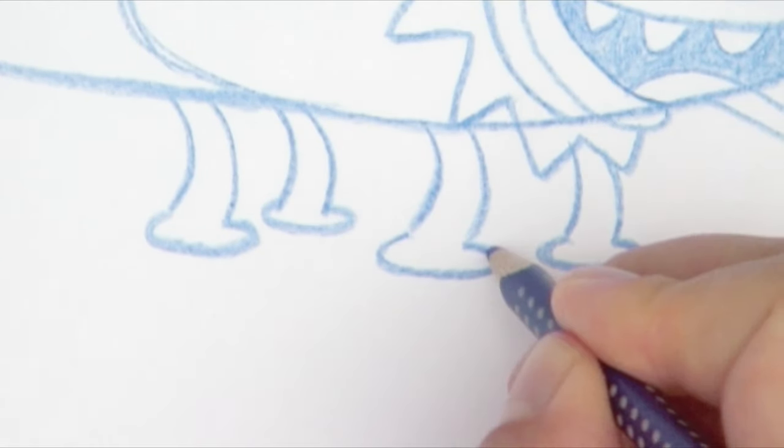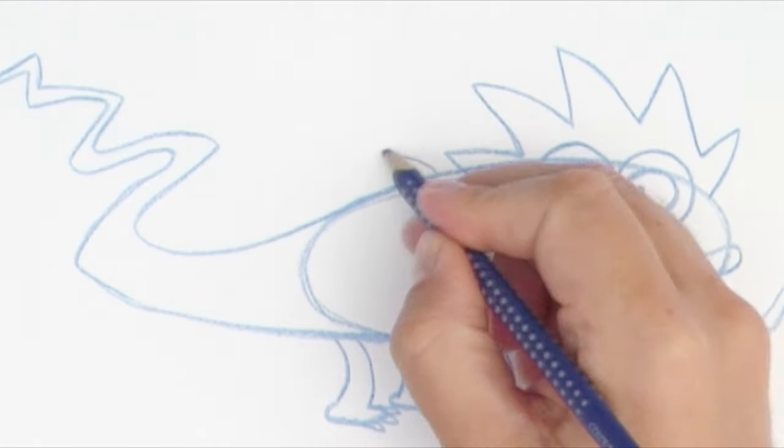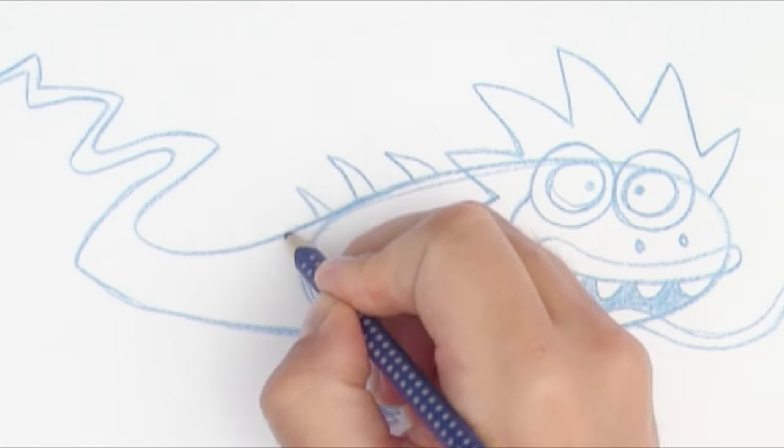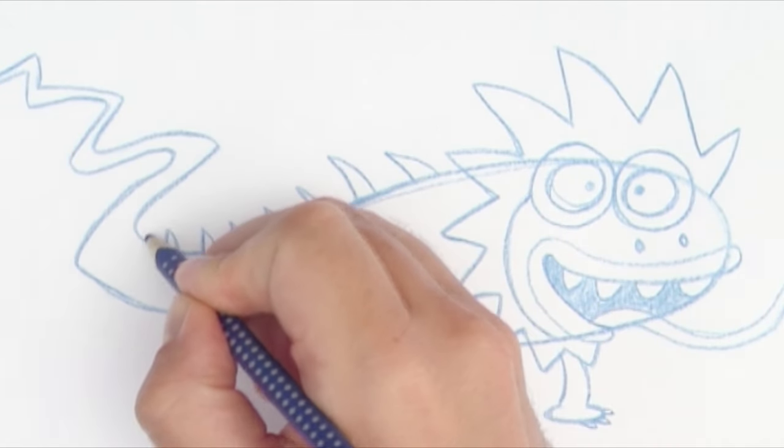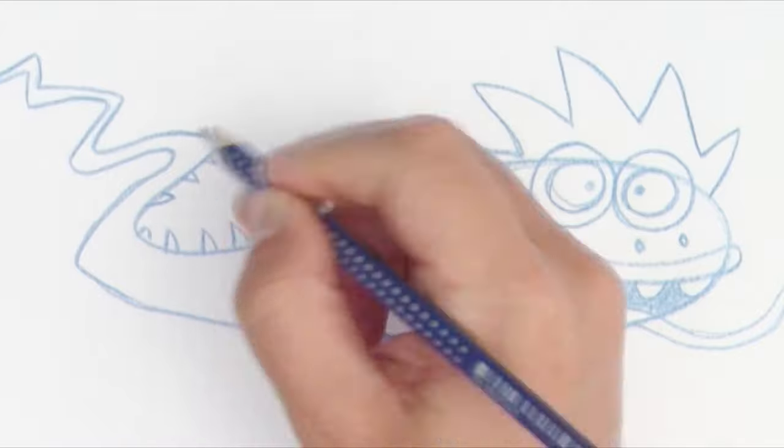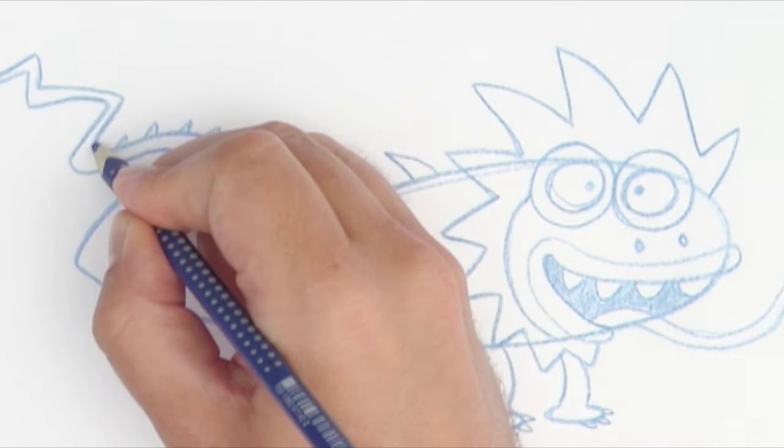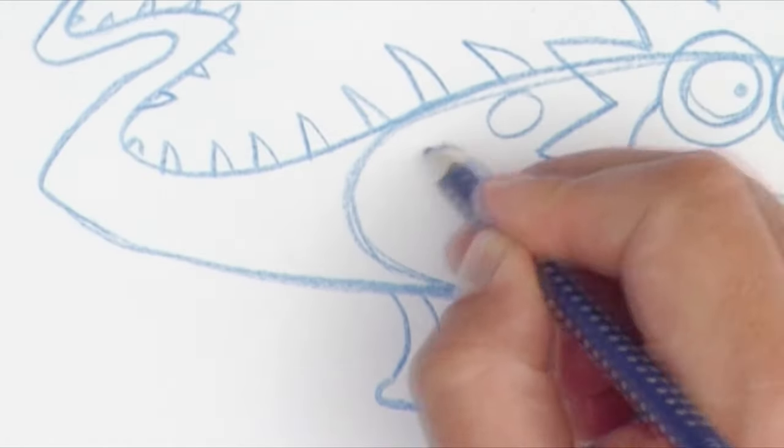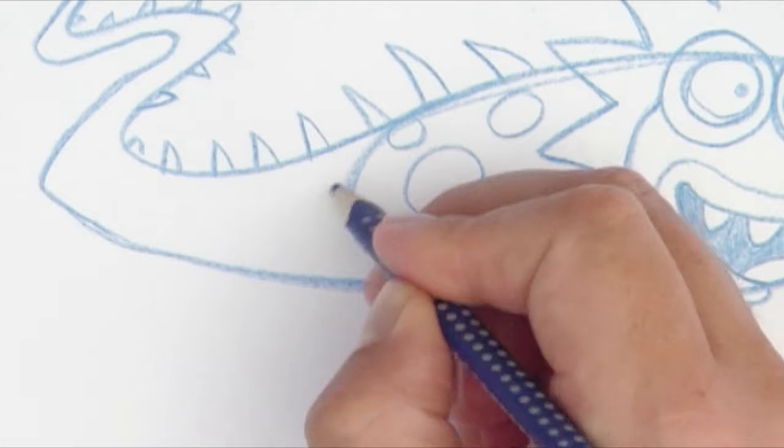At the tip of each foot I draw three small claws. On the back and along the tail I draw spikes coming out. Lizards have all these cool details. Before we start with the coloring, let's add a spotted pattern.